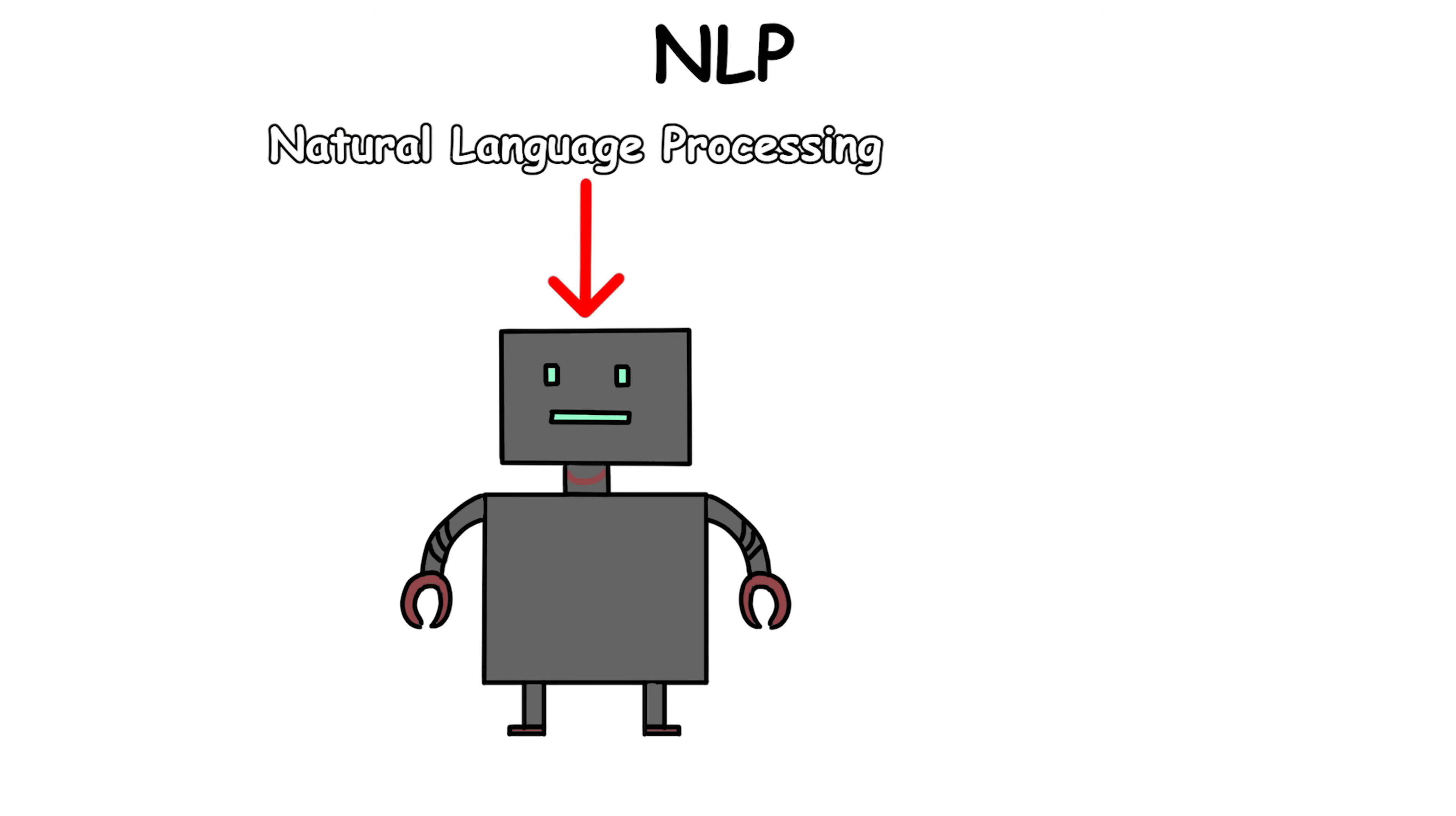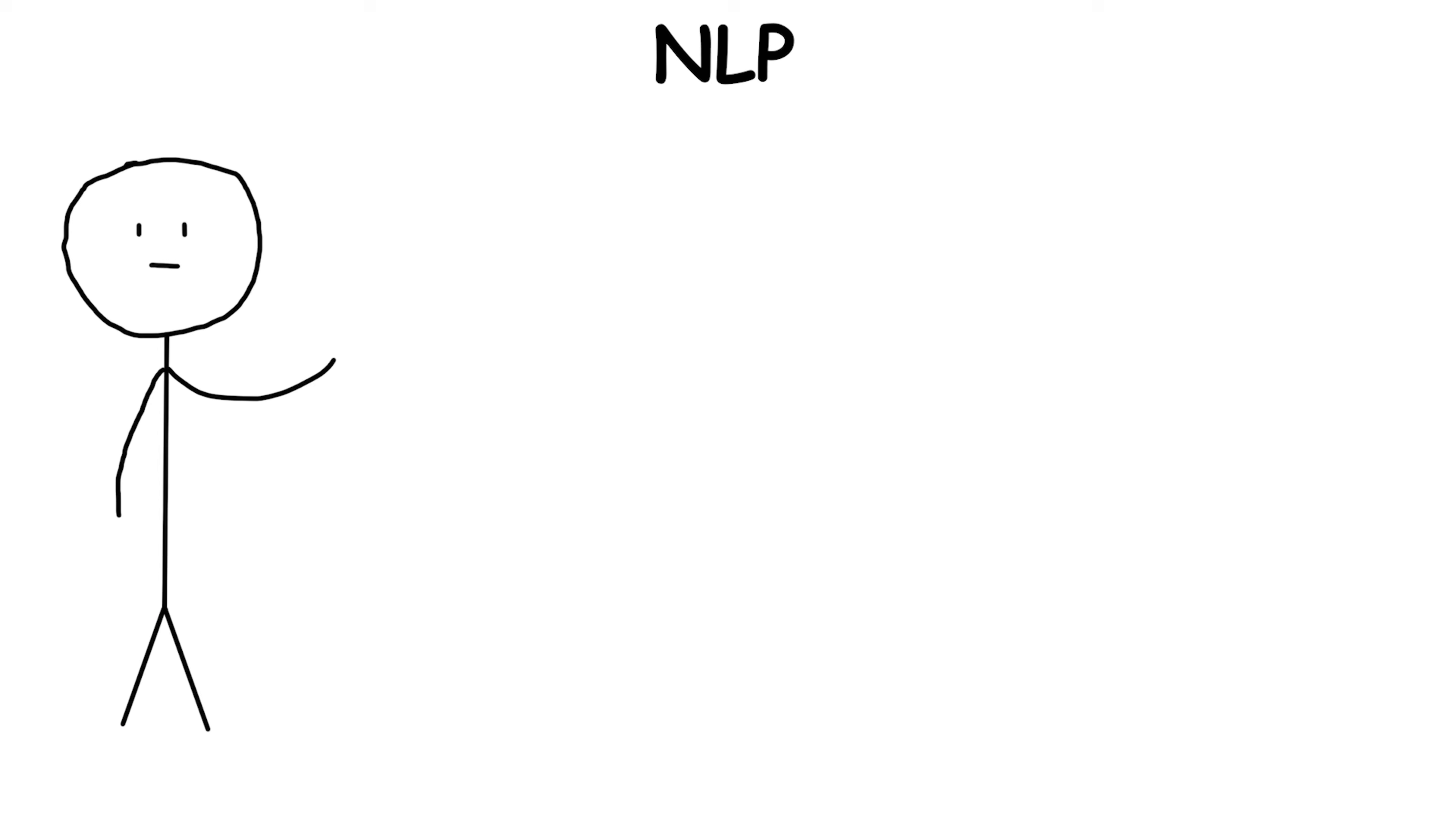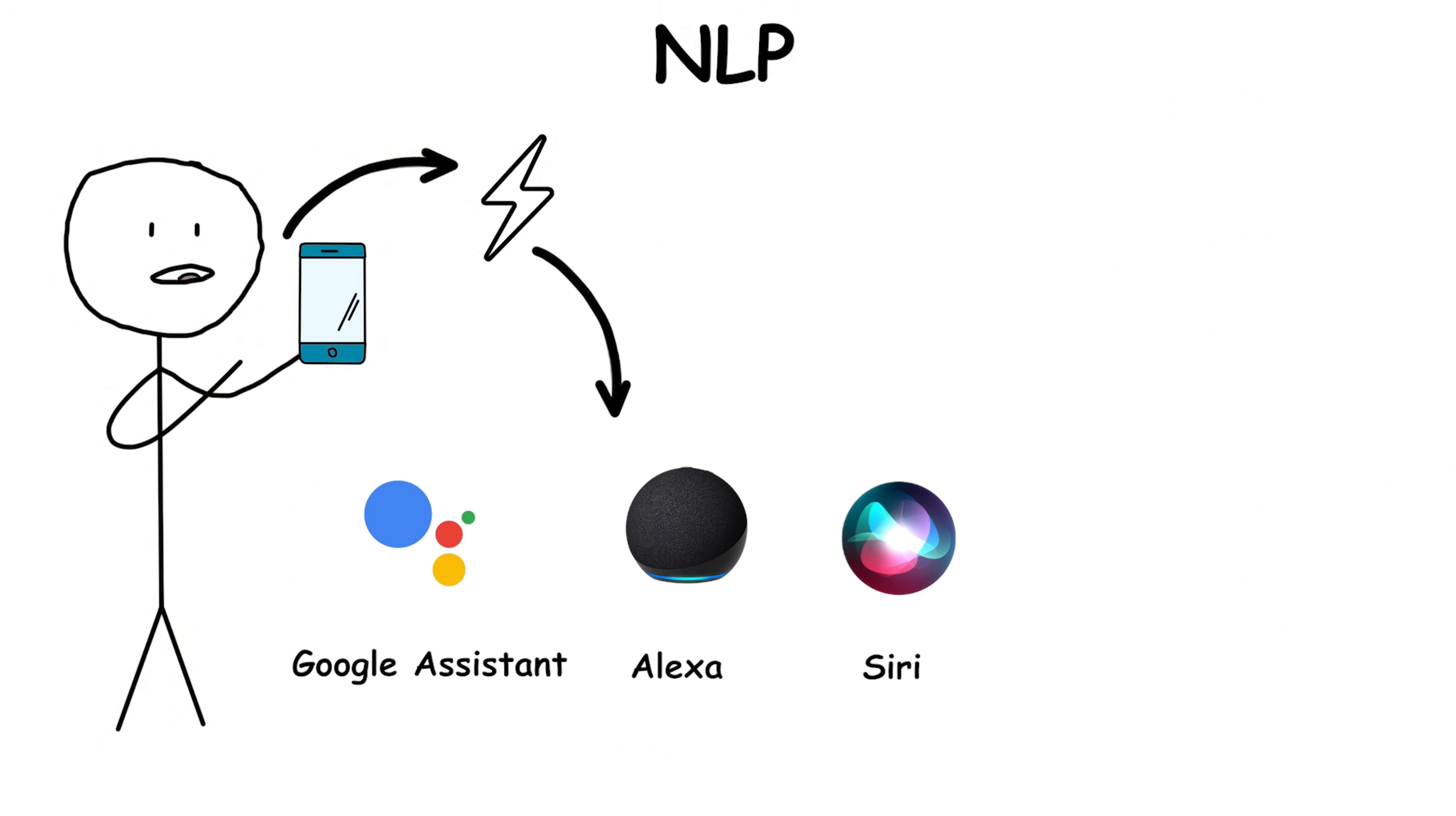NLP enables AI to understand, interpret, and generate human language for practical interaction. NLP is what powers your phone's voice assistant to transcribe speech, your email's spam detection, or translation apps that convert languages in real time.